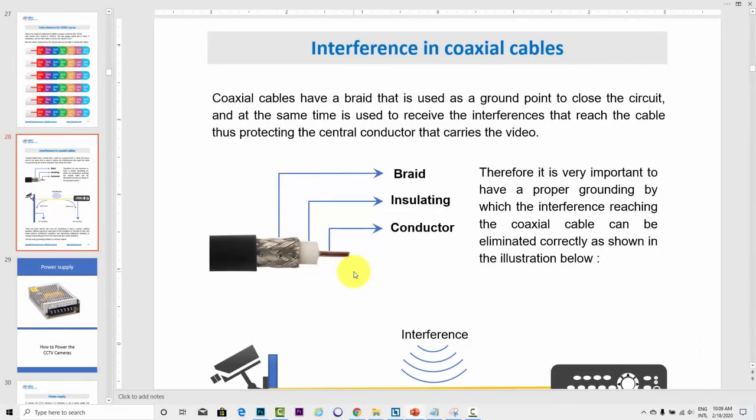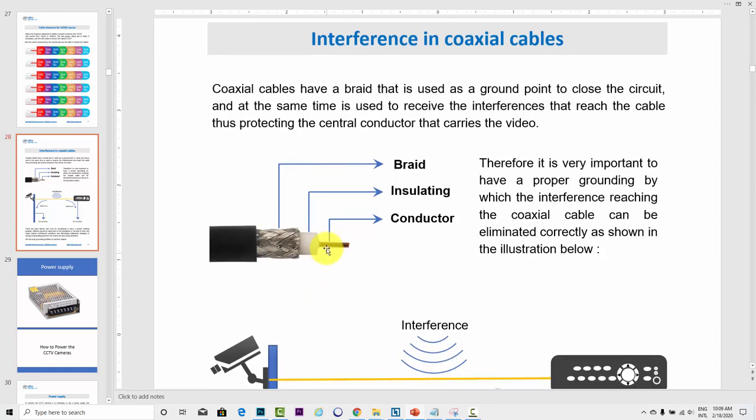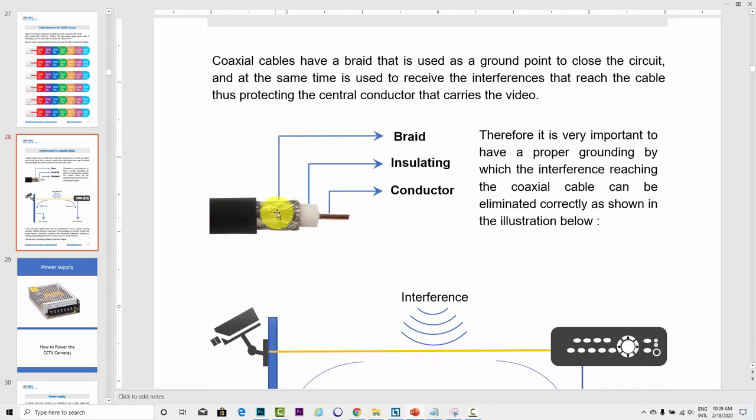So here on the screen I have this presentation about interference in coaxial cables. Here I have a cable. As you can see, there is a braid and a conductor.